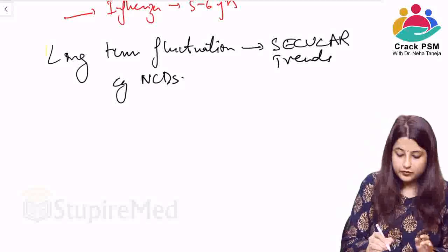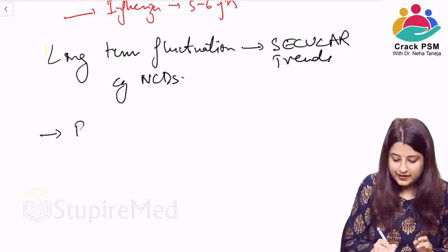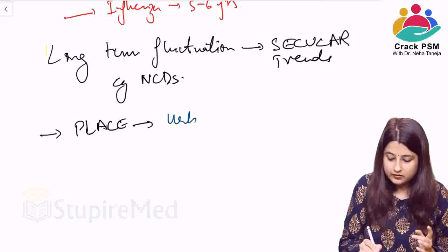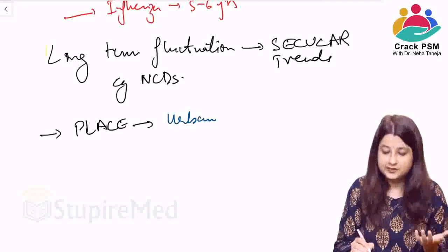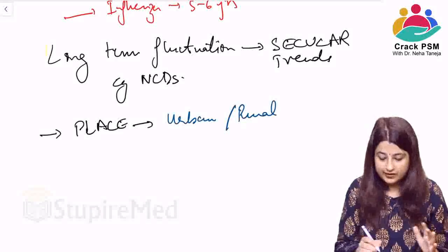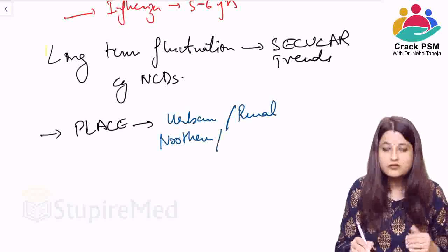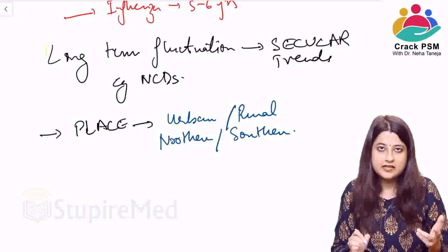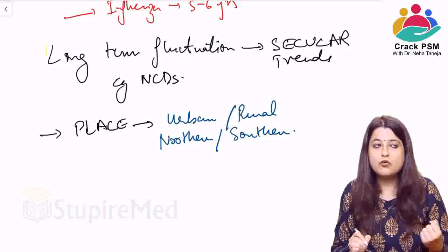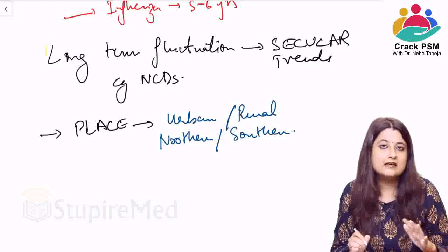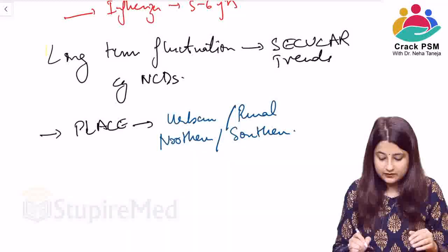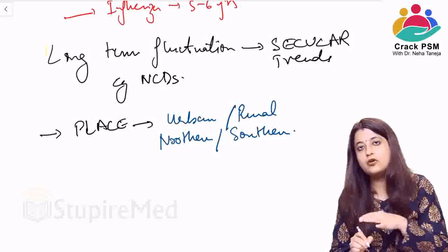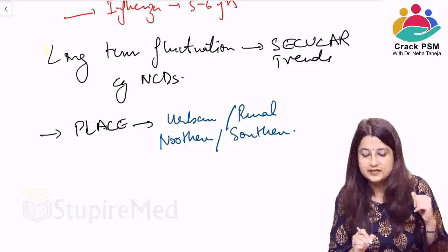Moving forward, we studied distribution of disease in terms of time. Now the next is distribution of diseases in terms of place — meaning certain diseases are more distributed in urban areas, some in rural areas, some in northern parts and some in southern parts of the country. For example, Kala Azar is seen more in northern parts — UP, Bihar, Jharkhand. Questions can be asked about which diseases follow a place distribution and which do not.